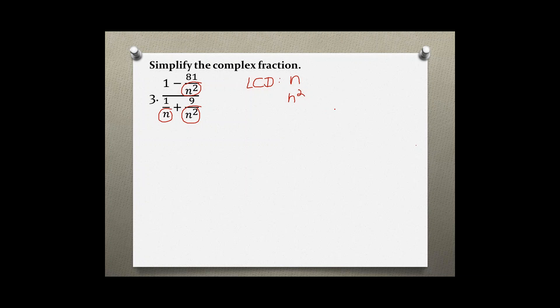When we have variables we always choose the variable with the highest degree. In this case it's two, so our least common denominator would be n squared.